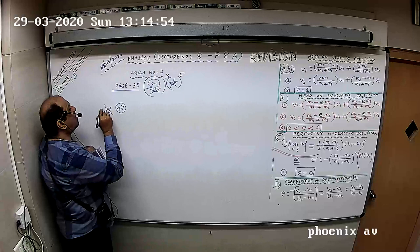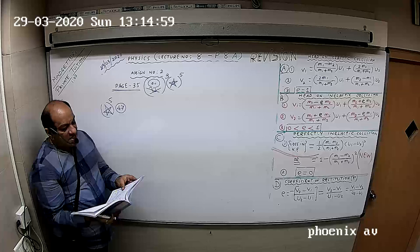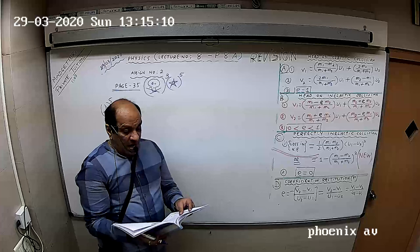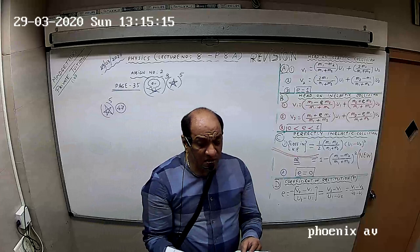Question number 47. Extraordinary super question. A body at rest breaks up into three parts. If two parts having equal mass are flying off perpendicular to each other with velocity of 12 meters per second, then the velocity of the third part having mass three times each part.